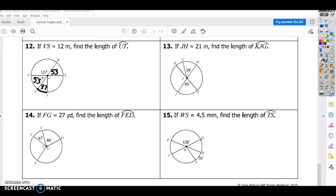For number 12, if VS is 12, so V and S are both on the circle. So that means this is the diameter instead of the radius this time. So this is the diameter. Find the length of UT. So since I have 127 given, and this is a semicircle, I know that this has to be 53, and this one also has to be 53. If this one's 90, and this one's 53, this one's 37. So let's go ahead and look at the length formula.